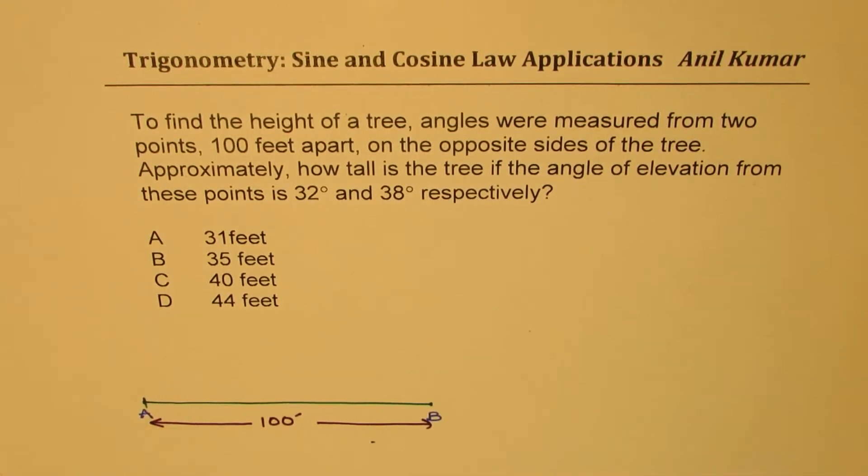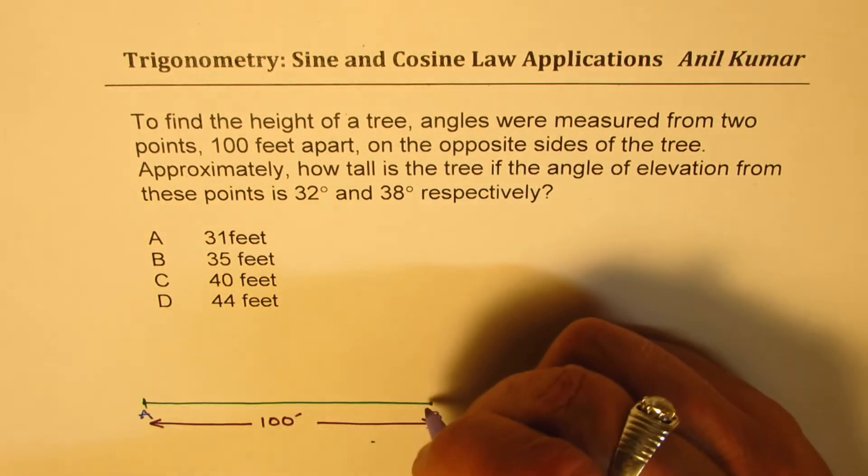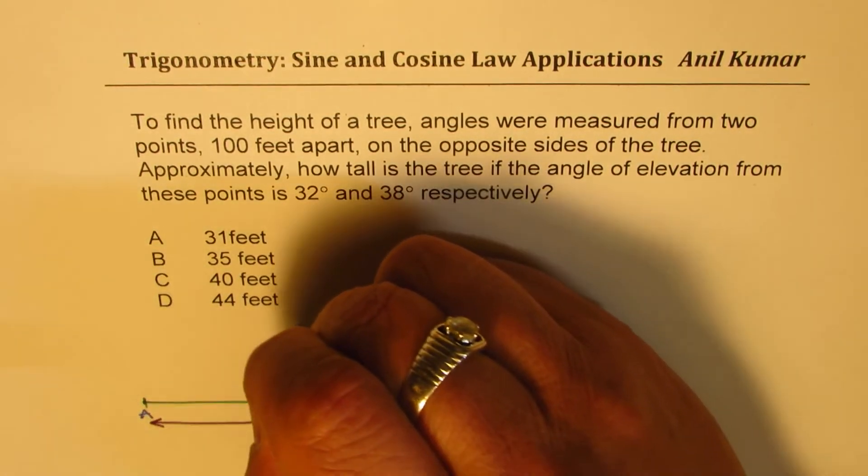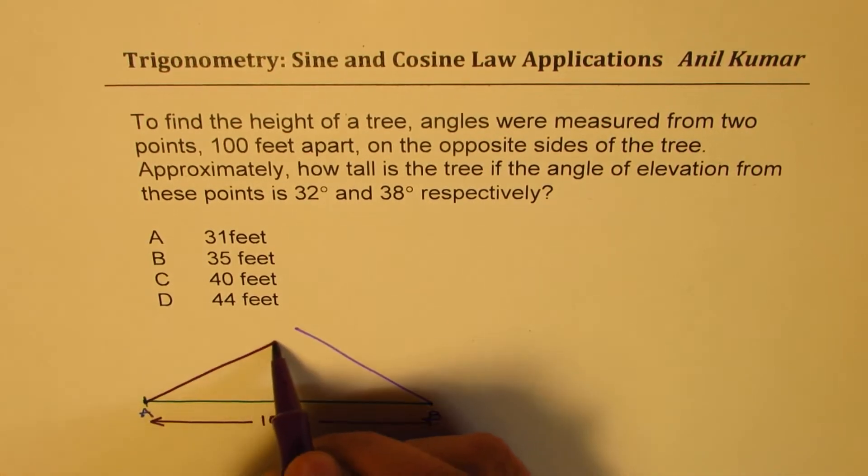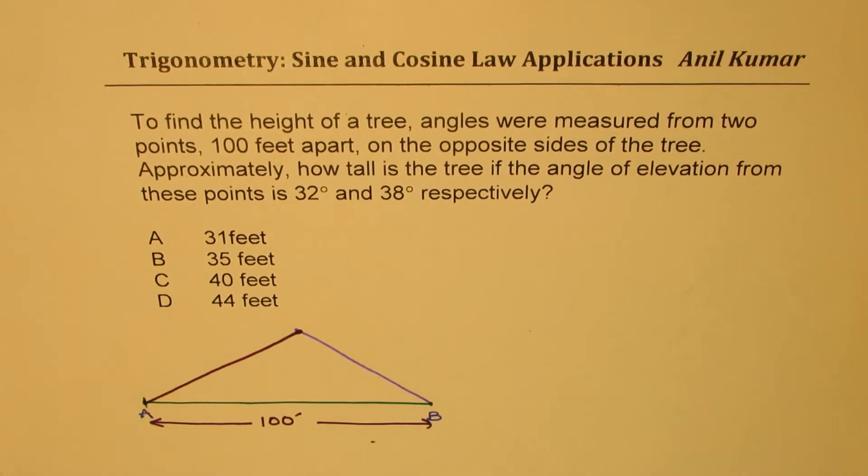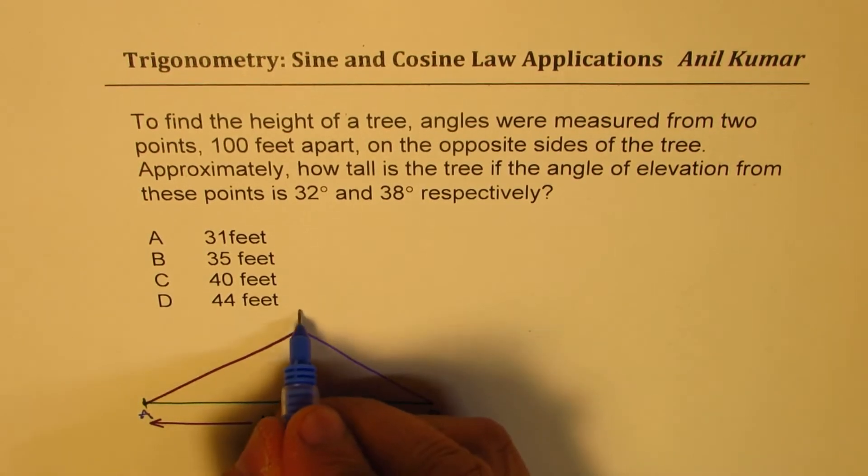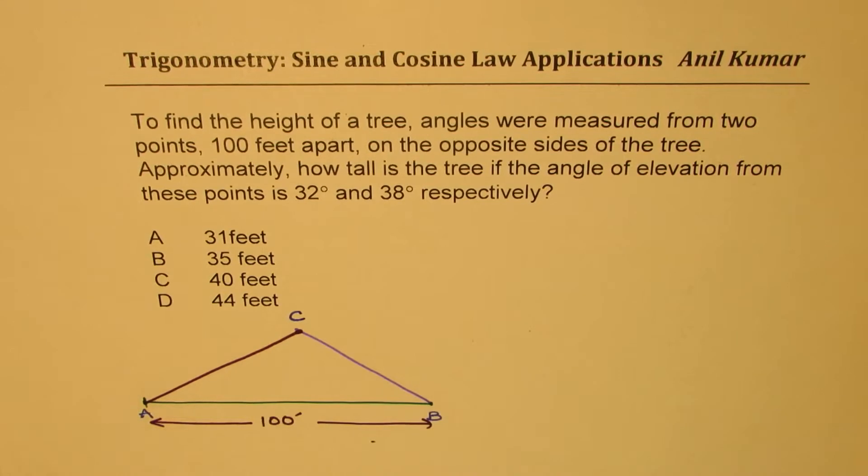The angle of elevation is 38 and 32. Let's sketch from this side first. Let's say this is one angle, and the other angle from the other side. Let's call this point as C. Let me place the tree right there.